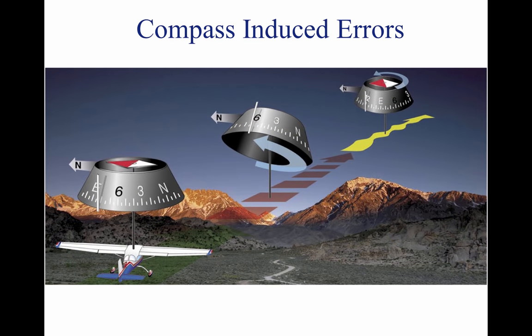In acceleration error, the dip correction weight causes the end of the float and card marked N — the south-seeking end — to be heavier than the opposite end. When the aircraft is flying at a constant speed on a heading of east or west, the float and card are level and the effects of magnetic dip and the weight are approximately equal. If the aircraft accelerates on a heading of east, the inertia of the weight holds its end of the float back and the card rotates toward north; as soon as the speed stabilizes, the card swings back to its east indication. If the aircraft decelerates on this easterly heading, the inertia causes the weight to move ahead and the card rotates toward south until the speed again stabilizes. When flying on a heading of west, the same things happen: inertia from acceleration causes the weight to lag and the card rotates toward north; when the aircraft decelerates on a heading of west, inertia causes the weight to move ahead and the card rotates toward south.